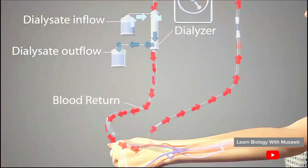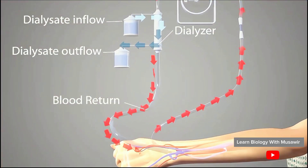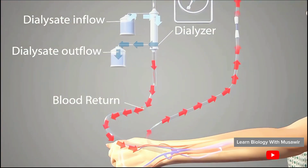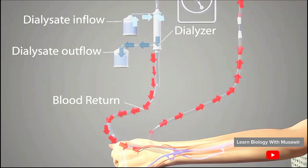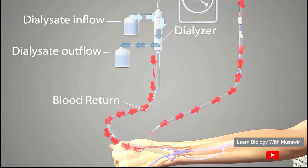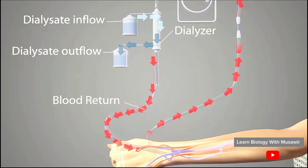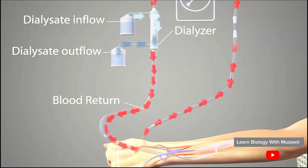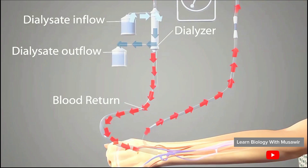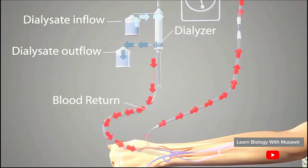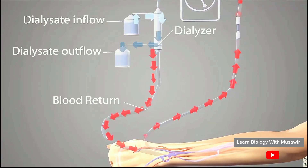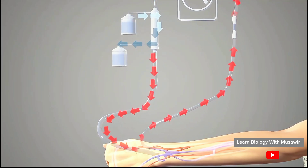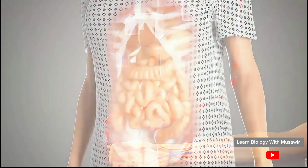Throughout hemodialysis, fresh dialysate is drawn into the dialyzer, and used dialysate is drained off. At the same time, the hemodialysis machine returns the filtered or cleaned blood to the body. The needles are removed when the dialysis is complete.